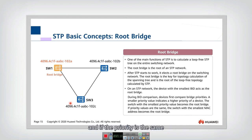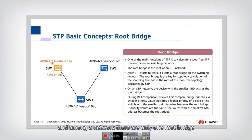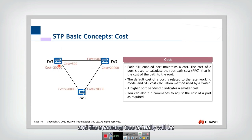If the priority is the same, then we look at the MAC address — the switch with the lowest MAC address will be selected as the root bridge. Among a network, there is only one root bridge, and the spanning tree is constructed based on that root.